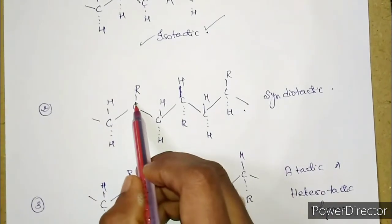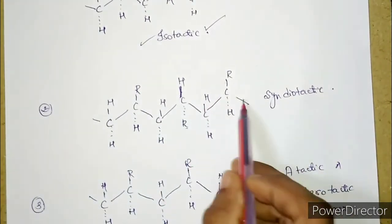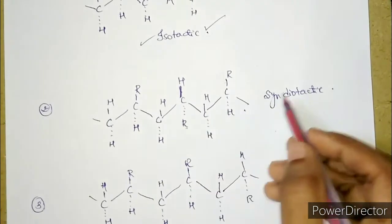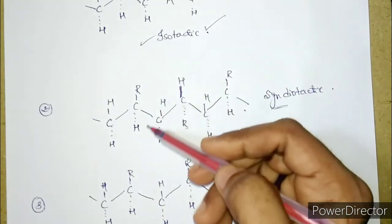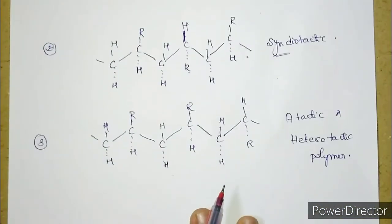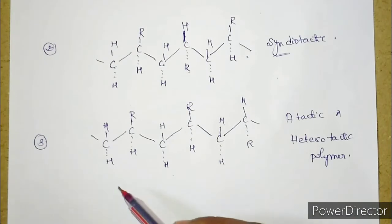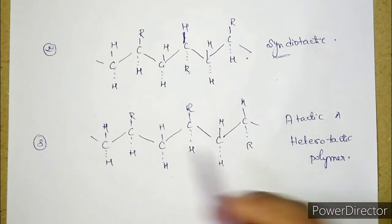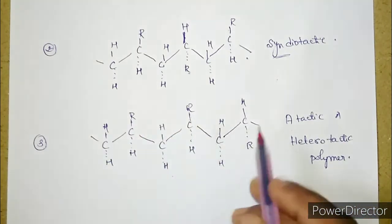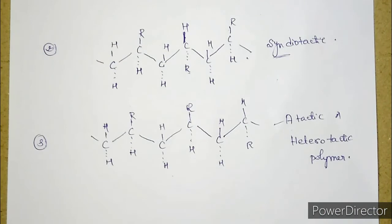The second isomeric structure is syndiotactic. Here the R group is present alternately above and below — above, below, above, below, and so on. Such a polymer is called syndiotactic, with R groups alternating above and below the plane of paper. The third type is atactic or heterotactic, where the R groups are present in a random direction with no proper arrangement.